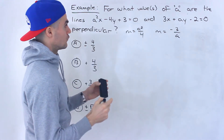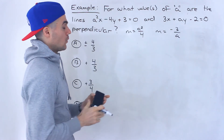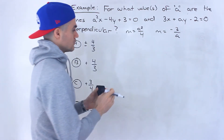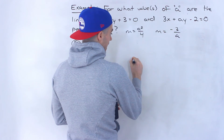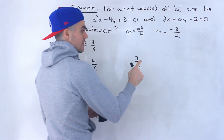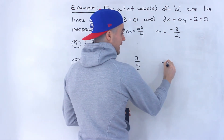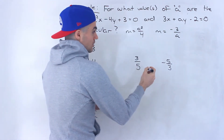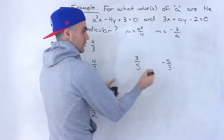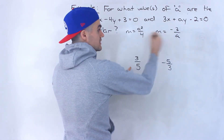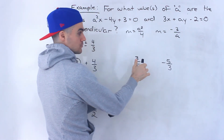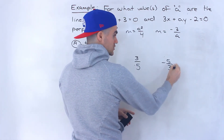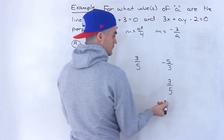We need to find for what values of A these lines are perpendicular. If they're perpendicular, the slopes are negative reciprocals of one another. For example, if one line has a slope of 3 over 5, a perpendicular line would have a slope of negative 5 over 3 — negative reciprocal. So we can take one slope, flip it, and change the sign to make it equal to the other.